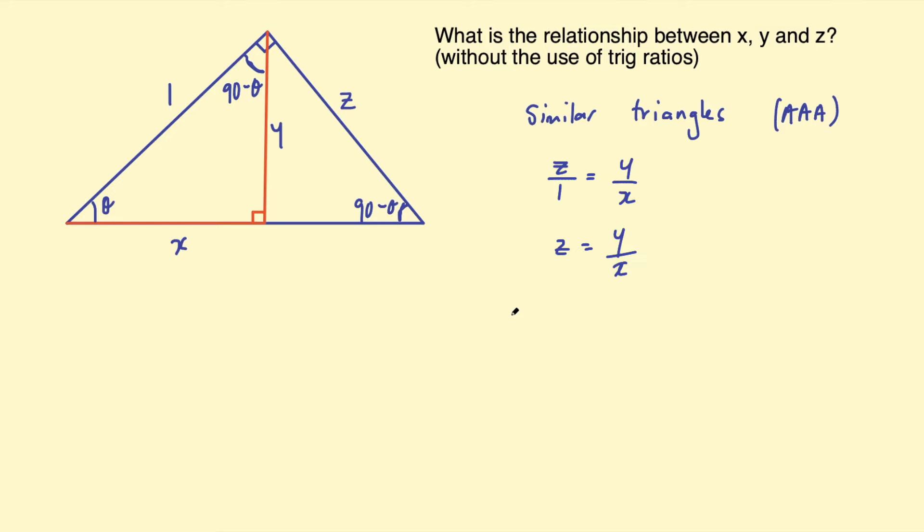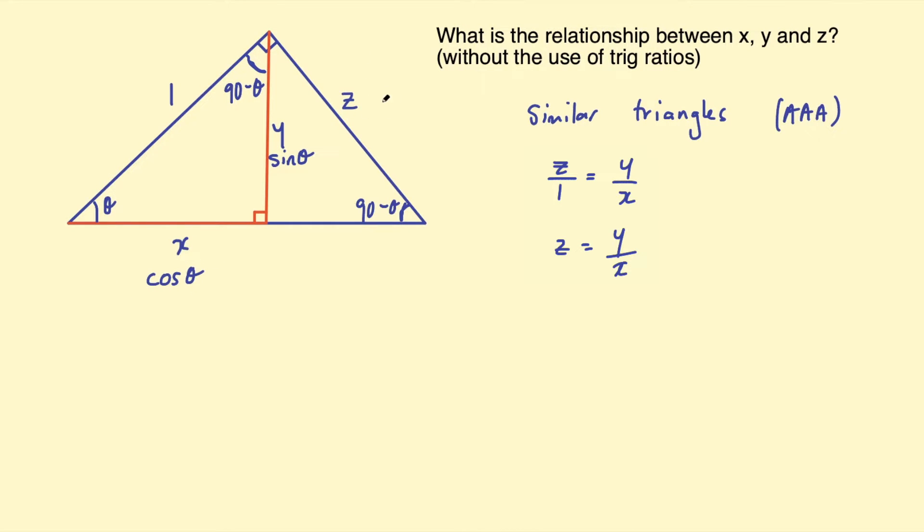This is one way to think about the trigonometric functions sine, cosine, and tangent. If we look at a right angle triangle with a hypotenuse of 1, this leg opposite the angle you're thinking about - so theta in this case - this side has a length of sine theta. X is cosine theta and z is tan theta. We've just shown that z equals y over x, so therefore tan theta equals sine over cosine.